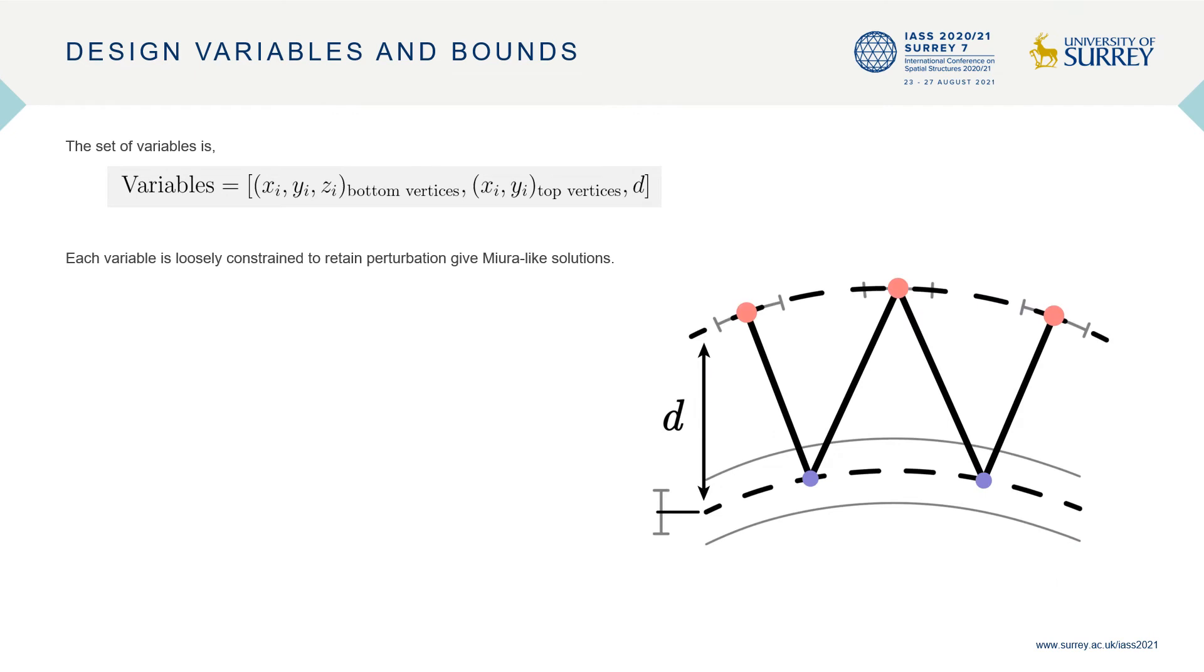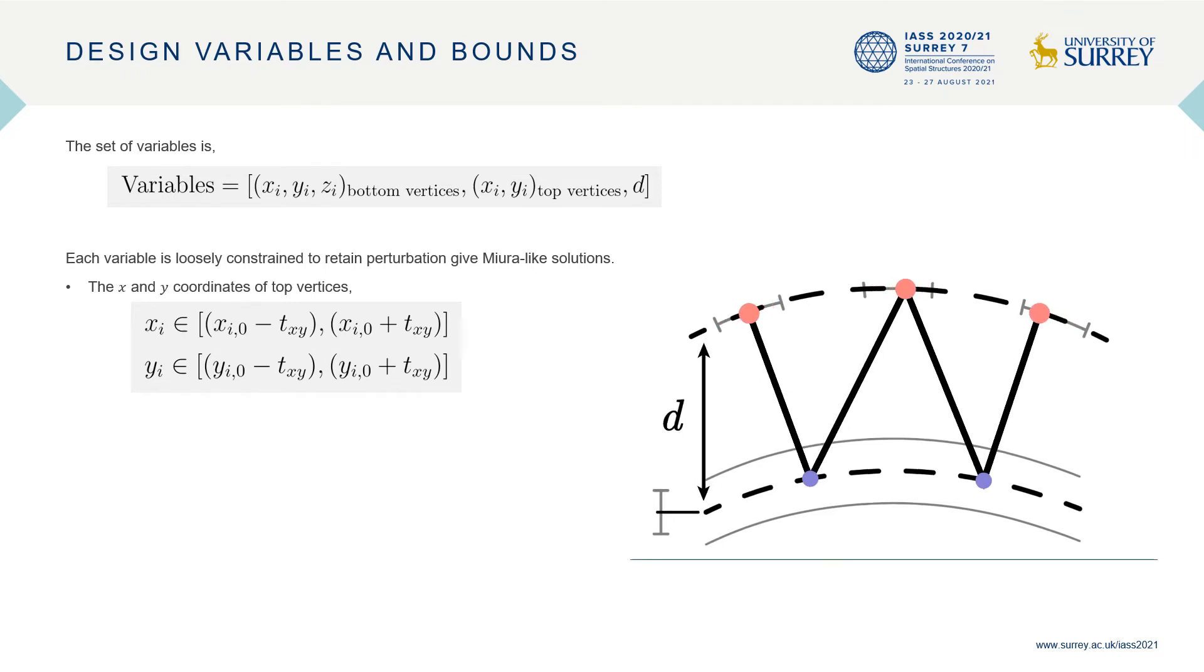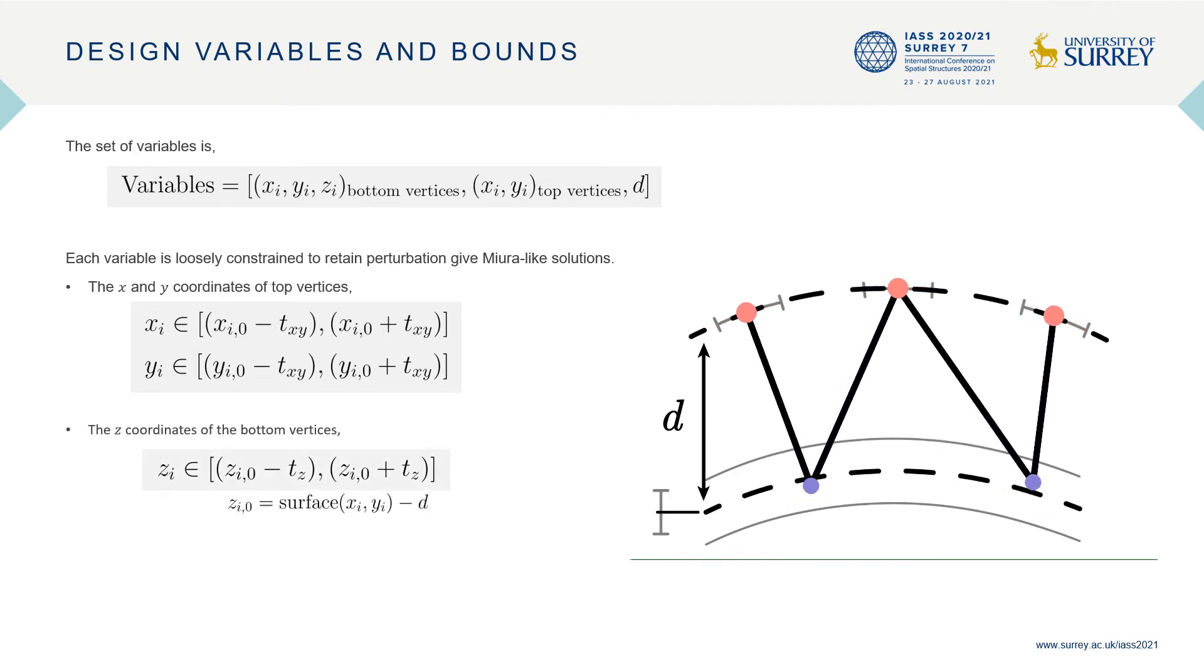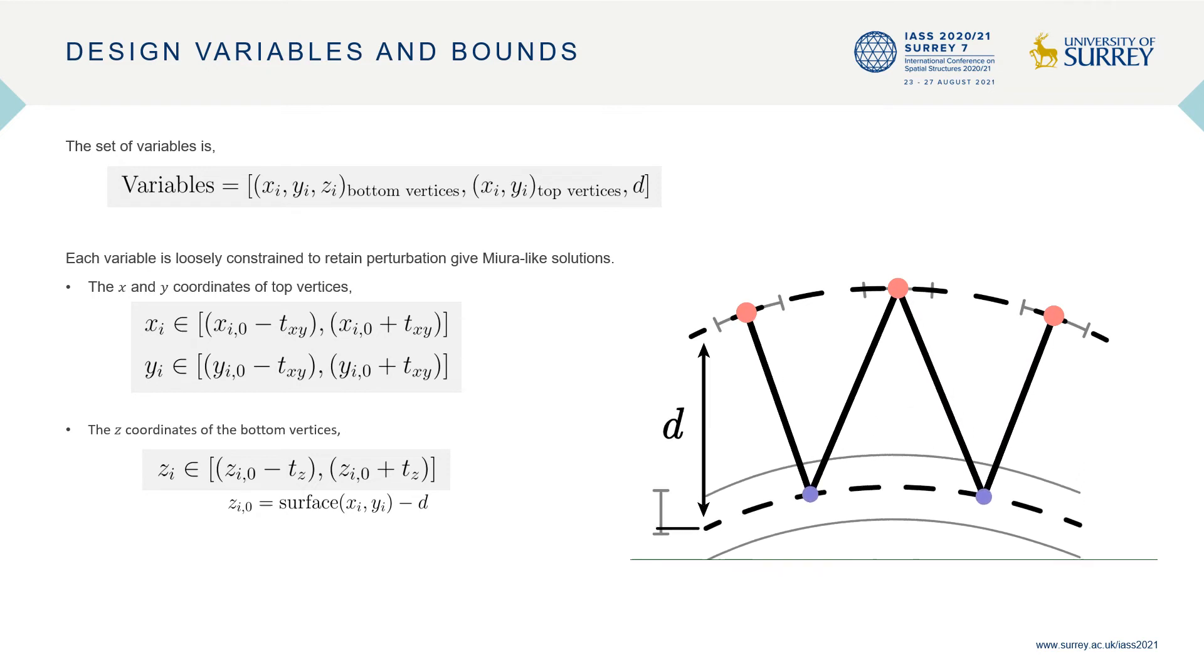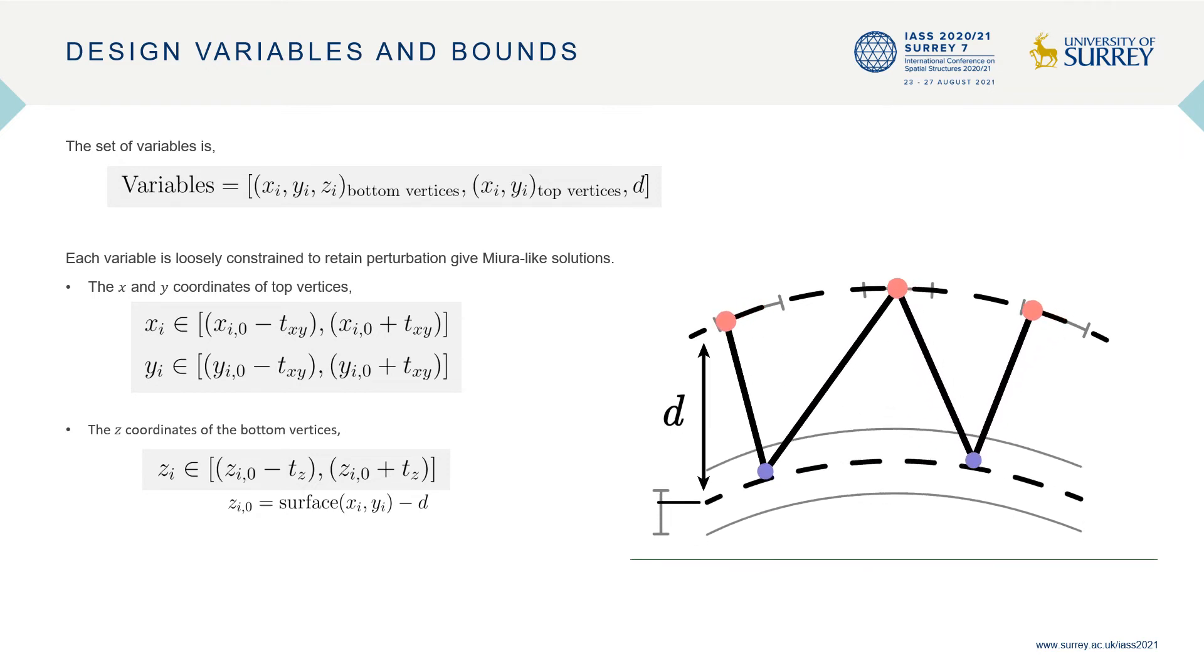In addition to this setup, we also impose certain tolerance bounds on the perturbations of the free variables. For example, x, y coordinates of the top vertices are allowed to move within a square region of side 2tx,y. The z coordinates of the bottom vertices are allowed to move within a tolerance of 2tz about the offset surface.